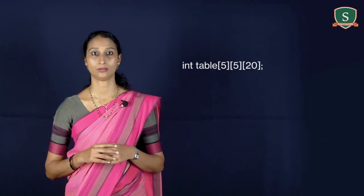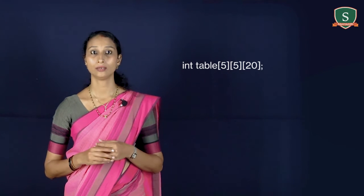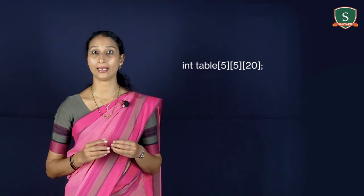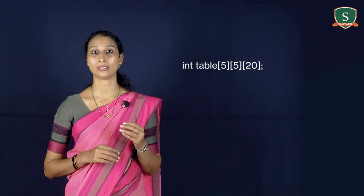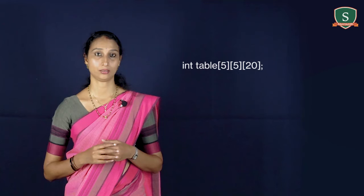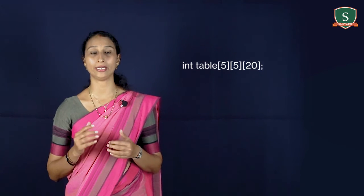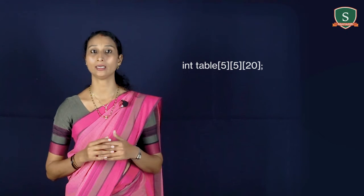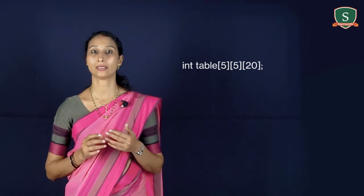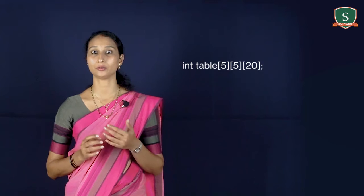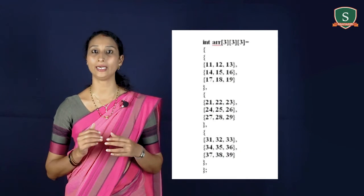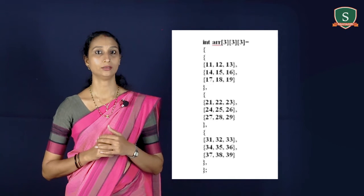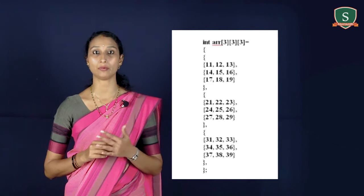Next, how to find the size of a multidimensional array? Consider this example: int designates the array type integer, and table is the name of a 3D array. The array can hold 500 integer type elements. This number is reached by multiplying the value of each dimension — in this case, 5 × 5 × 20 equals 500. The representation of the 3D array is shown, with three two-dimensional arrays.